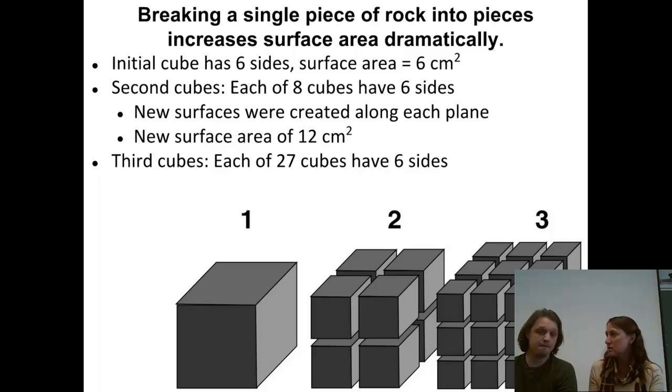What you'll find out is that you've doubled the amount of surface area. So we went from six square centimeters in the first diagram, where it's just the cube, to now 12 square centimeters. So that's going to have a big impact on the amount of chemical weathering that's going to occur. It's going to happen that much faster because there's that much more surface area.